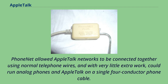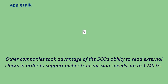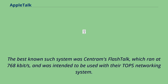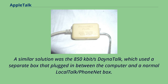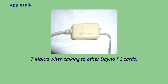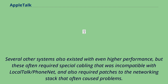Other companies took advantage of the SCC's ability to read external clocks in order to support higher transmission speeds, up to 1 Mbps. The best-known such system was Centram's FlashTalk, which ran at 768 kbps and was intended to be used with their TOPS networking system. A similar solution was the 850 kbps DanaTalk, which used a separate box that plugged in between the computer and a normal LocalTalk/PhoneNet box. Dana also offered a PC expansion card that ran up to 1.7 Mbps when talking to other Dana PC cards. Several other systems existed with even higher performance, but these often required special cabling incompatible with LocalTalk/PhoneNet.